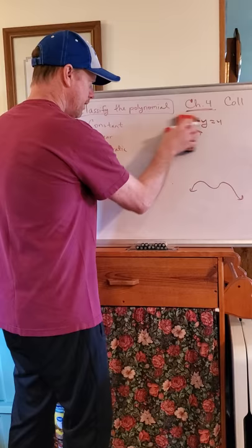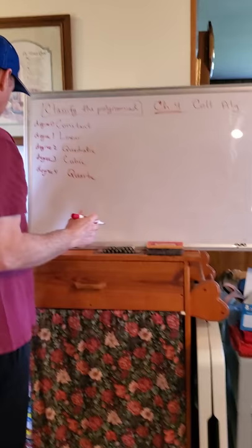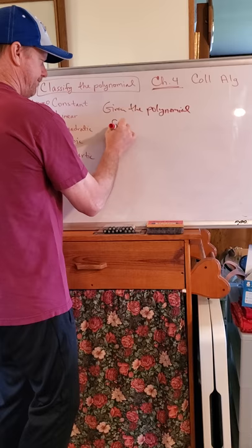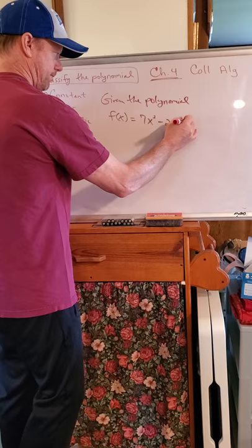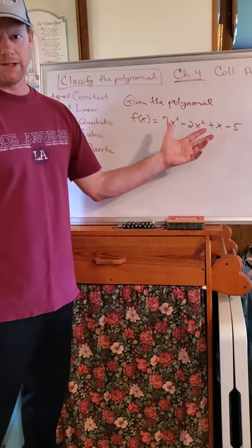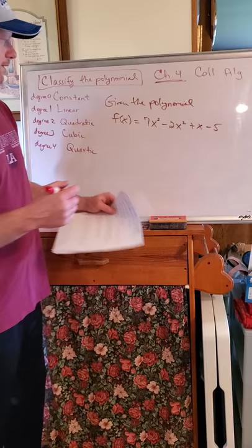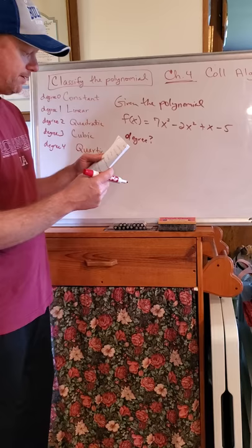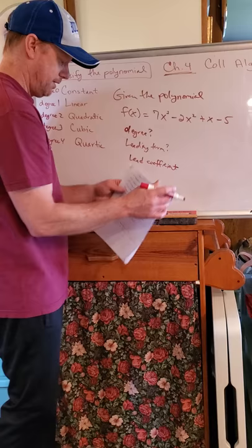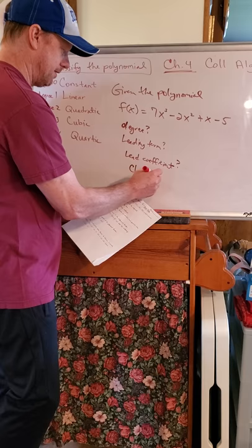So that being said, it's going to say, given the polynomial. So you have y equals f of x equals 7x cubed minus 2x squared plus x minus 5. It's going to give you a polynomial function like this. And then it's going to ask you several questions. It's going to say, what's the degree of a polynomial? What's the degree of it? What's the leading term? What's the lead coefficient? And then it's going to say, classify it as one of these. Is it constant? Is it linear? Is it quadratic? Is it cubic? Or is it quartic?